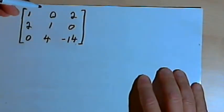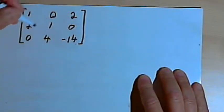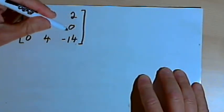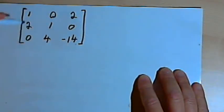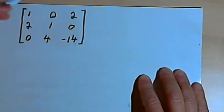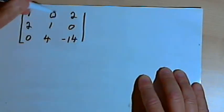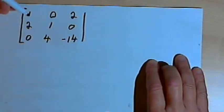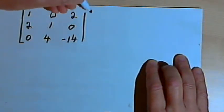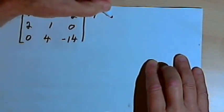Here's the matrix we'll be working with. It's 3 by 3: 1, 0, 2, 2, 1, 0, 0, 4, negative 14. We want to find the inverse of this matrix. The first thing we're going to do is create an augmented matrix by taking this original matrix and making it the left side, and for the right side we're going to have a 3 by 3 identity matrix.